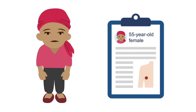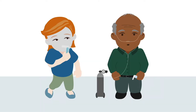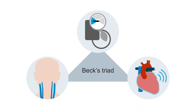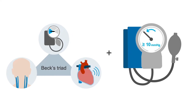Remember the patient you imagined presenting with cardiac tamponade. How can you confirm the diagnosis? Here's where obtaining a pulsus paradoxus measurement is extremely useful. While there are a few other conditions that can cause pulsus paradoxus, like asthma or COPD exacerbations, the clinical picture of Beck's triad plus pulsus paradoxus is very indicative of tamponade.